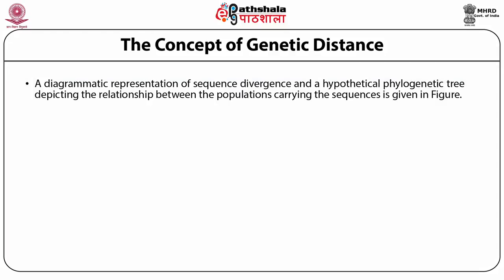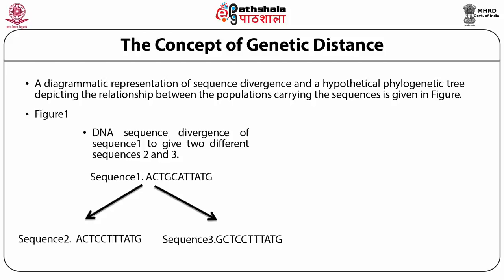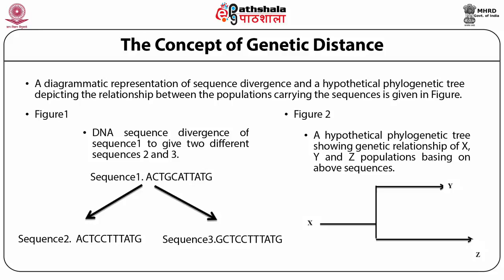A diagrammatic representation of sequence divergence and a hypothetical phylogenetic tree depicting the relationship between populations carrying the sequence is shown in the given figure. The first figure shows DNA sequence divergence of sequence 1 giving rise to two different sequences 2 and 3, and the second figure shows the hypothetical phylogenetic tree showing the genetic relationship of X, Y, and Z populations based on the above sequences.